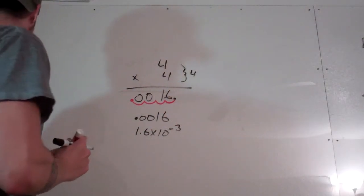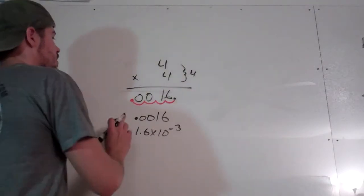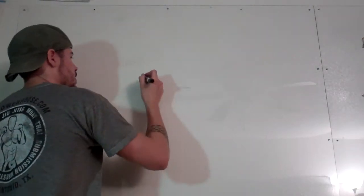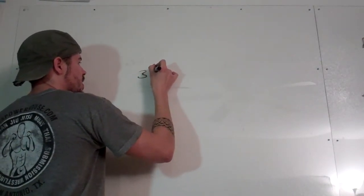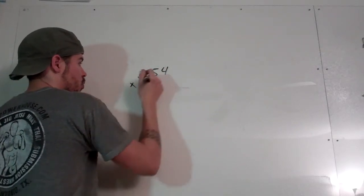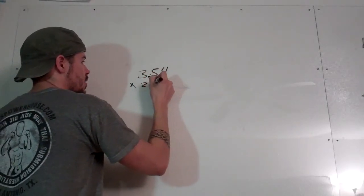So that example is kind of easy. Let's get to one that's a little more involved. Let's try something like 3.54 times 2.18.